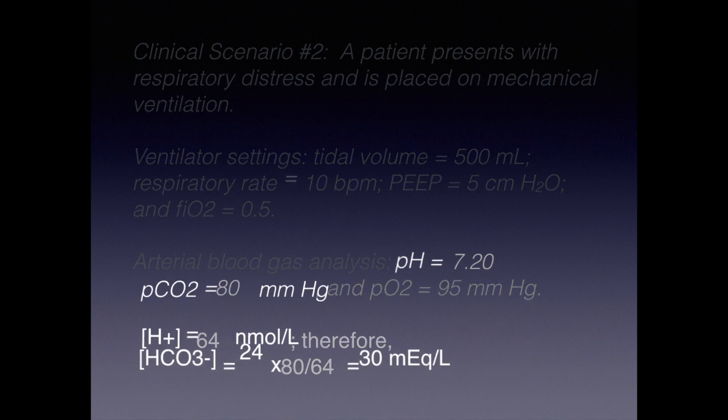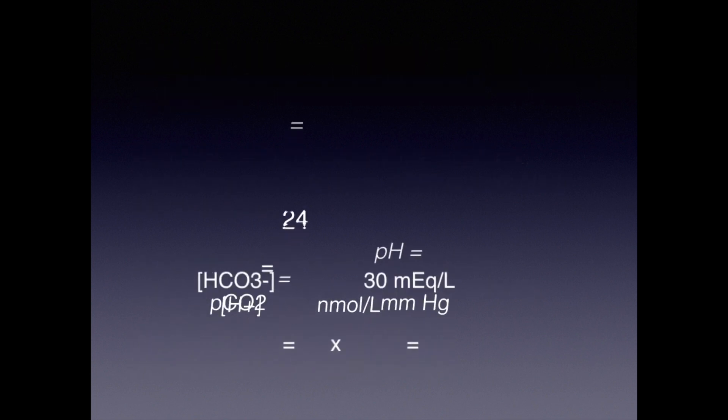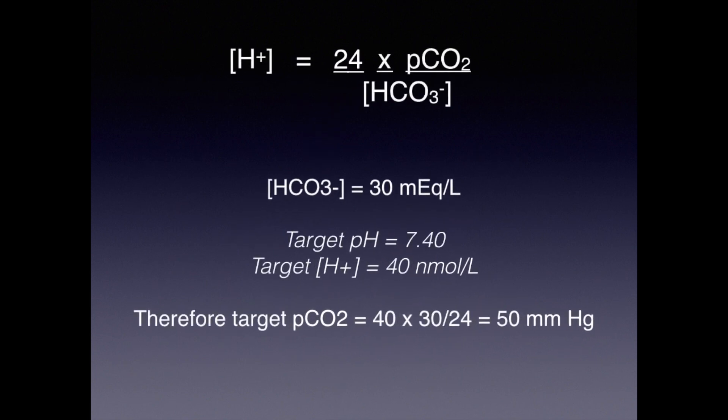The next step is to calculate our target pCO2. Using the same equation, we know that the bicarb is 30 and our target pH is 7.40, or 40 nanomoles per liter hydrogen ion concentration. So if we rearrange and solve for pCO2, we find that pCO2 equals 40 times 30 divided by 24, which equals a target pCO2 of 50 millimeters of mercury.